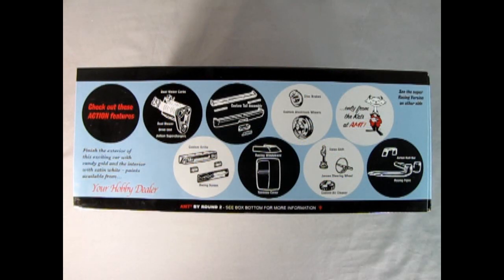Also included are these deluxe decals. On the end of the box we can see this really nice three quarters illustrated view of the stock Oldsmobile F85 Cutlass convertible. Check out these action features: dual Weaver carbs, dual blower drive unit, Judson supercharger, custom tail light assembly, disc brakes, custom aluminum wheels, custom grille, racing screen, racing windshield, tonneau cover.